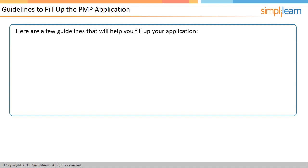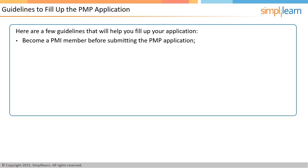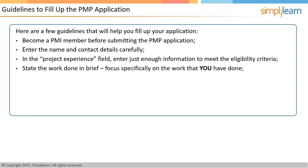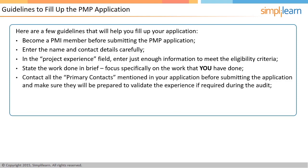Following are a few guidelines that will help you fill up your application. First, you should become a PMI member before applying for the PMP examination. If you are not already a member, members get a discount of $150 for the PMP application, which is more than the cost of membership itself. Becoming a member is a straightforward process and can be completed online at www.pmi.org. Make sure you enter the contact details and name correctly, as this is important so you don't miss any correspondence. Also, ensure the details on the certification are correct. You need to be careful while filling the project experience field in the experience verification form. Be brief in stating what you have done on the project and focus specifically on the work that you have done. Contact all the primary contacts mentioned in your application prior to submitting it, as they should be prepared to support you in providing evidence about the experience if required during the audit process.